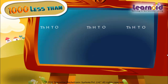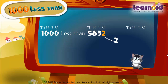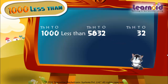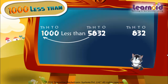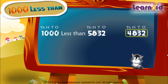Let's see another example. Find one thousand less than five thousand eight hundred thirty-two. Write two in the one's place. One thousand less than five thousand eight hundred thirty-two is four thousand eight hundred thirty-two.